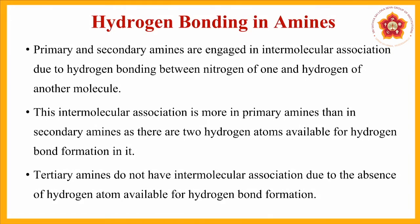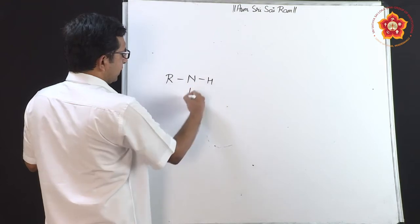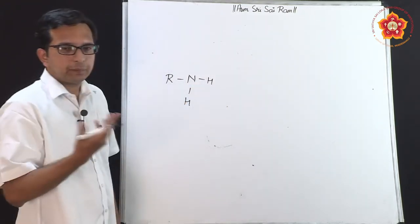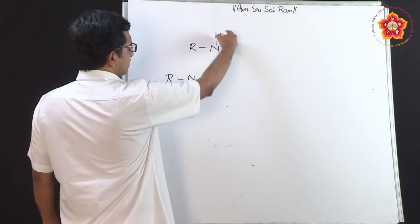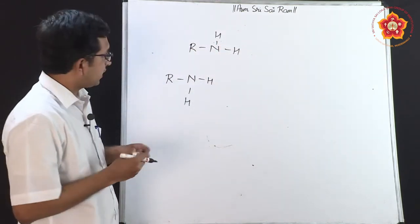Now studying intermolecular hydrogen bonding in amines themselves. In a primary amine, considering two molecules together, the hydrogen bonding occurs between the nitrogen of one molecule and the hydrogen attached to nitrogen of another, because this is electronegative element — hydrogen — further attached to an electronegative element.